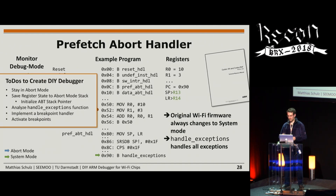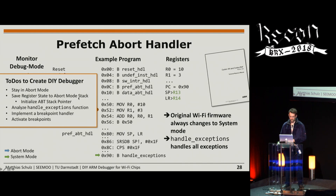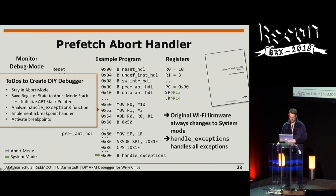Here is the to-do list for implementing our debugger. First, we need to stay in abort mode instead of switching back to system mode. Second, we need to save the register state onto the abort mode stack, keeping in mind that the abort mode stack pointer was never initialized, so we must initialize it ourselves. Then we need to analyze the handle exceptions function, implement a breakpoint handler, and activate breakpoints.